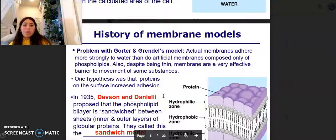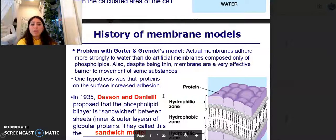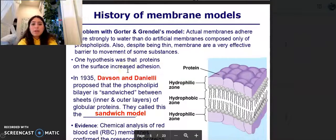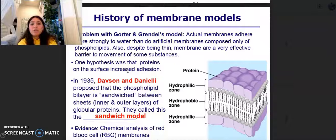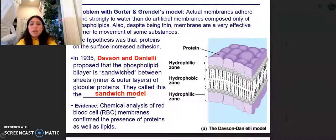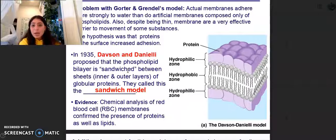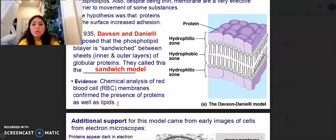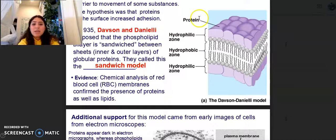The problem with Gorter and Grendel's model is that actual membranes adhere more strongly to water than do artificial membranes composed of only phospholipids. Also, despite being thin, membranes are a very effective barrier to movement of substances. One hypothesis was that proteins on the surface increased adhesion. In 1935, Davison and Danielli proposed that the phospholipid bilayer is sandwiched between sheets of inner and outer layers of globular proteins, which they called the sandwich model.